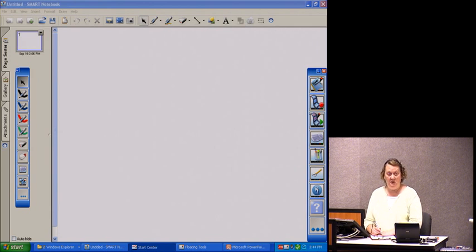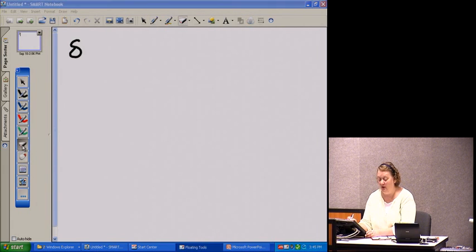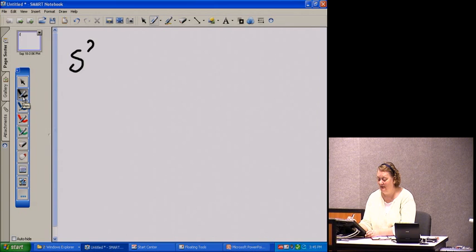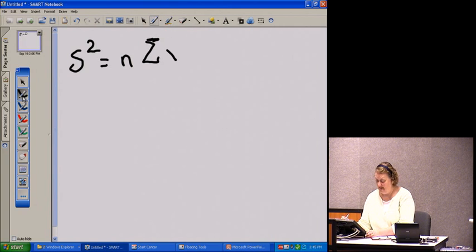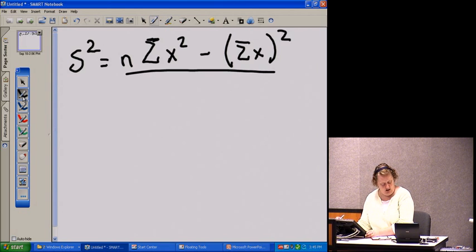I wanted to do an example on finding the standard deviation by hand. There are two formulas for this and the formula I'm going to use for this lesson is S squared equals n times the sum of x squared minus the sum of x squared, all over n times n minus 1.